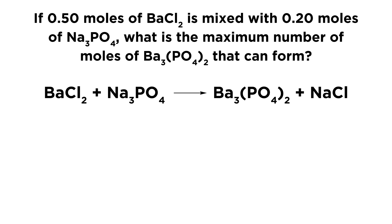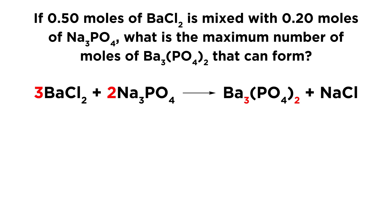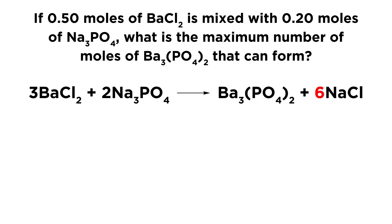However, this is not a balanced chemical equation. We have three barium ions and two phosphate ions in this product, so we're going to have to add some coefficients on the left. In order to get three barium ions on the right, we need three barium chlorides, and in order to get two phosphate ions, we need two sodium phosphates. Then we place a coefficient in front of NaCl — we have six sodium ions and six chloride ions, so we need a six in front of NaCl as well.